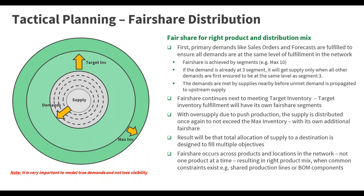Fair share distribution is similar to the tiering calculation in S&OP. One of the things it allows on the tactical distribution side is the ability to prioritize products as opposed to customers — so you're not always giving the same high-priority customers all their demand. This lets you look at things holistically across the supply chain, across all customers, and balance that out. It's a slightly different take — you're essentially shorting everyone consistently, looking at segments similar to what you would have seen in S&OP back in the day.